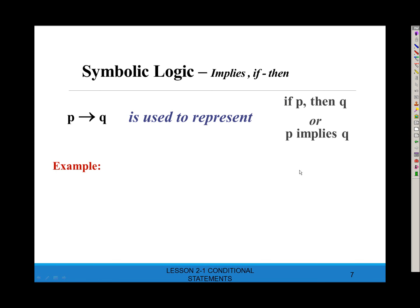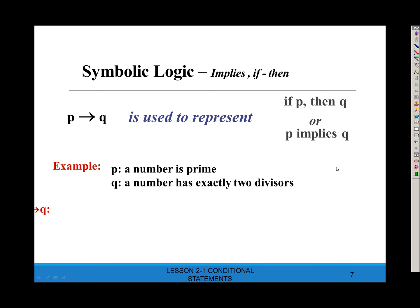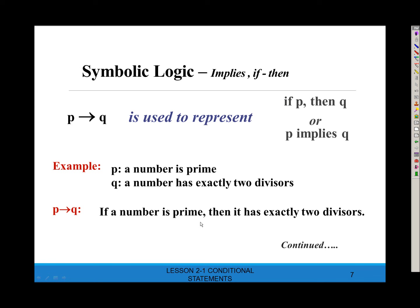Let's do some examples. Suppose statement P says 'a number has exactly two divisors.' If I want to write P → Q, I write out the full statement. Since P is first and then Q, I say: if a number is prime, then it has exactly two divisors. Notice I have the if-then because this is now a conditional statement — if statement P, then statement Q.